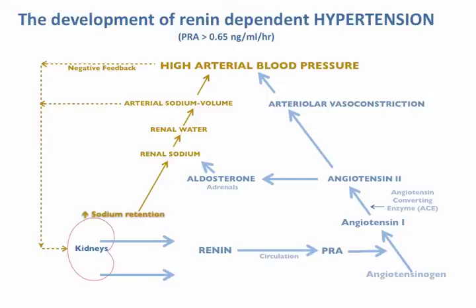PRA levels are not elevated, but they are not suppressed, and they are partly responsible for the high blood pressure. That is why patients with renin-dependent hypertension often have PRA levels that are in the normal range for subjects with normal blood pressure levels, but they respond to anti-renin system drugs with a fall in blood pressure. And that is our summary of how we see the renin-angiotensin system working in normal people and in the development of low renin hypertension and renin-dependent hypertension.